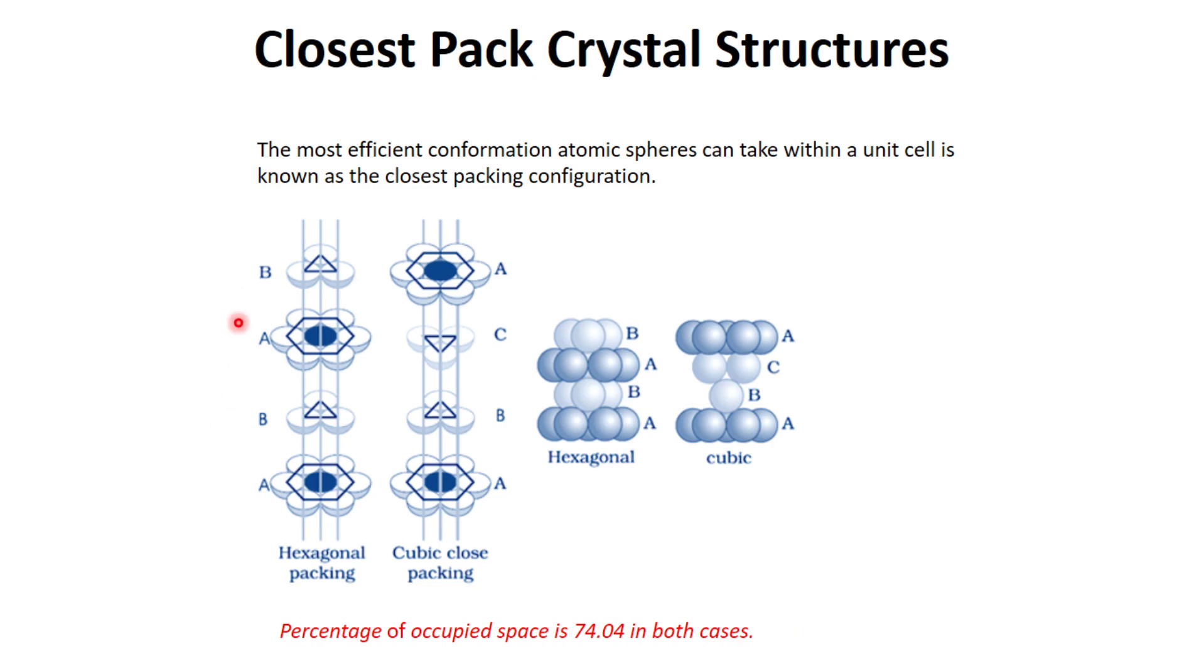So what is the difference between these two packings? It's the arrangement of layers. In hexagonal packing, we have layer A that can be seen, and then we have layer B. After layer B, layer A repeats itself.